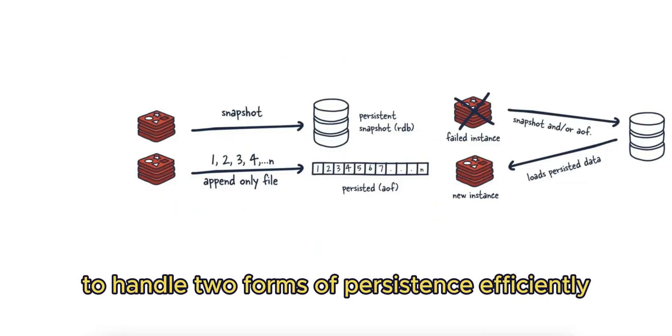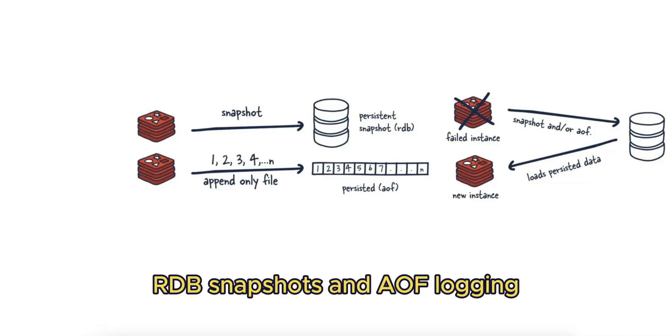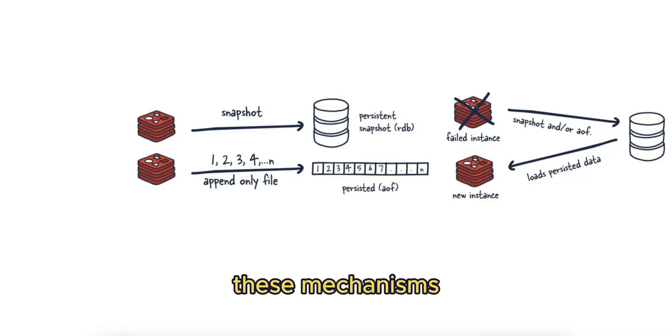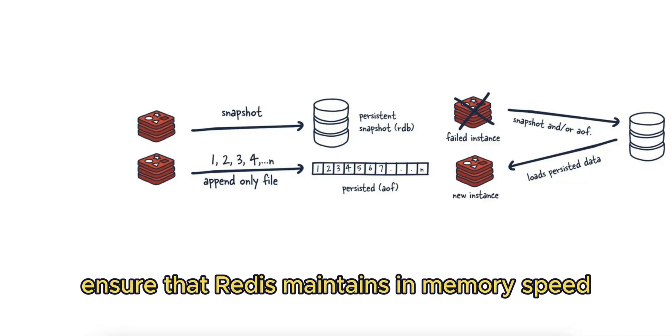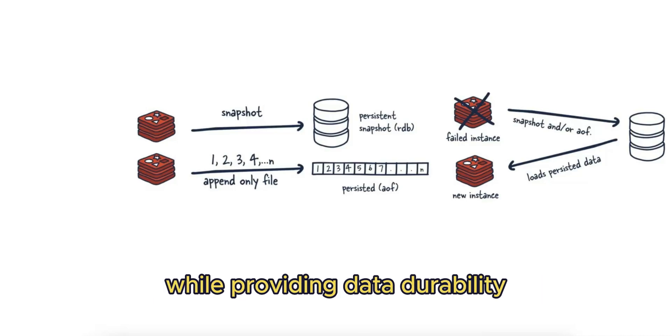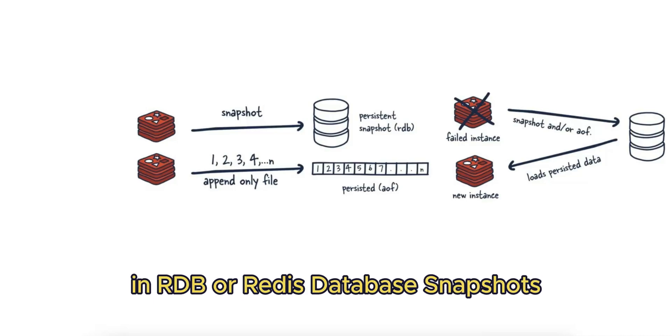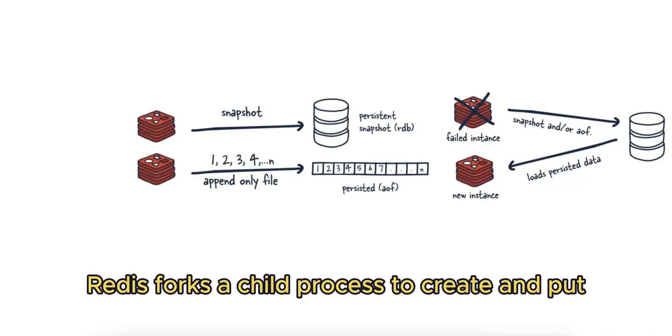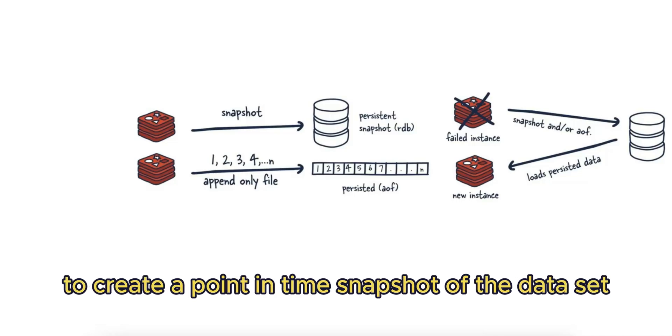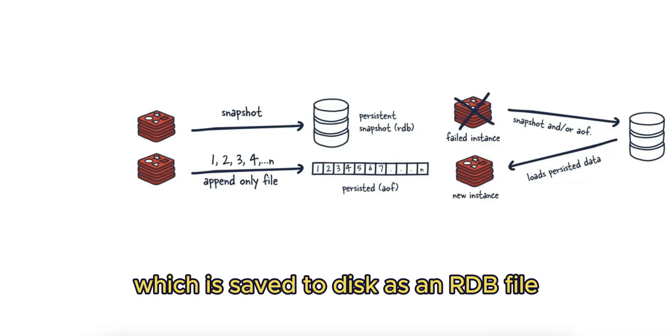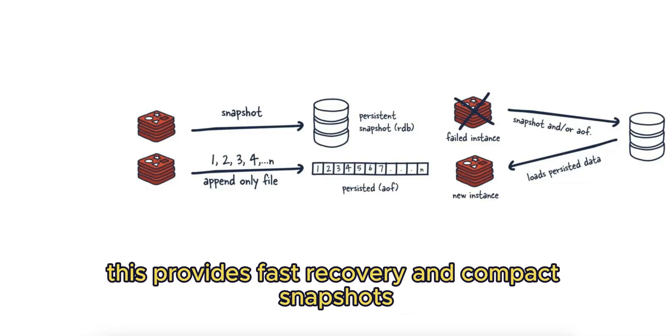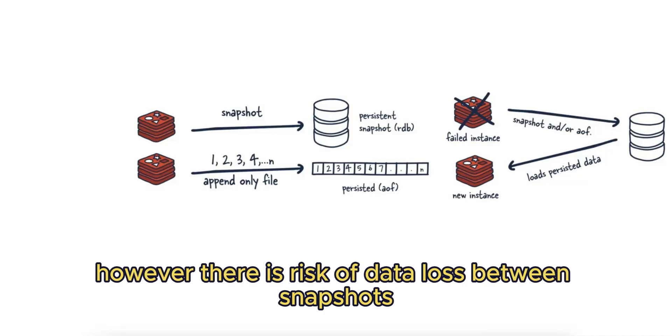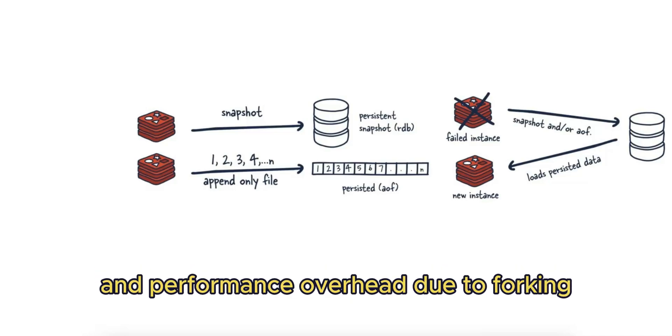Redis uses forking and copy-on-write to handle two forms of persistence efficiently: RDB snapshots and AOF logging. These mechanisms ensure that Redis maintains in-memory speed while providing data durability. In RDB (Redis Database) snapshots, Redis forks a child process to create a point-in-time snapshot of the dataset, which is saved to disk as an RDB file. This provides fast recovery and compact snapshots, however there is risk of data loss between snapshots and performance overhead due to forking.